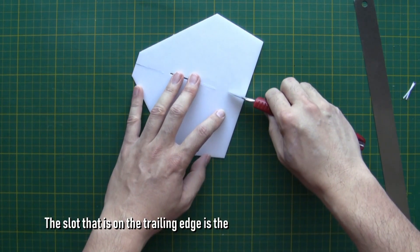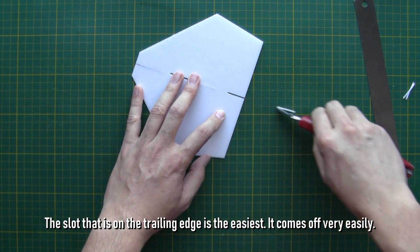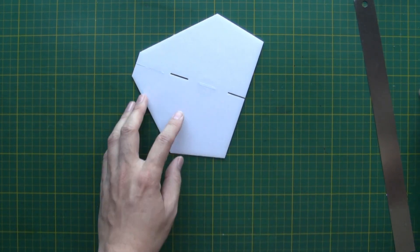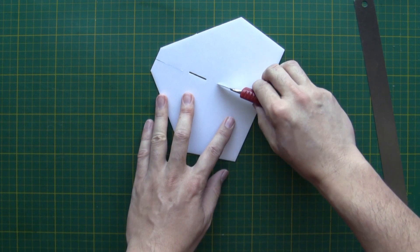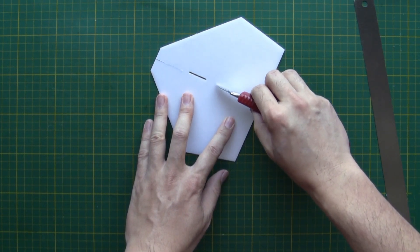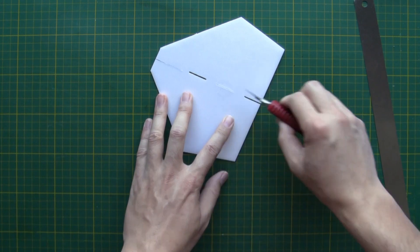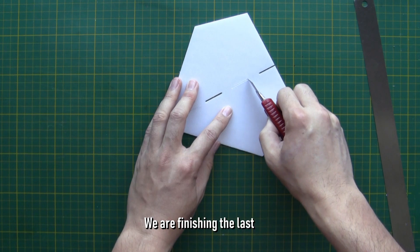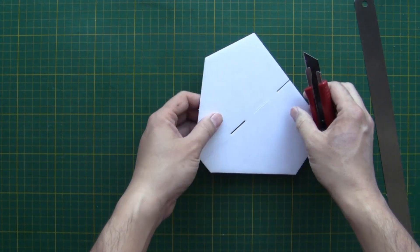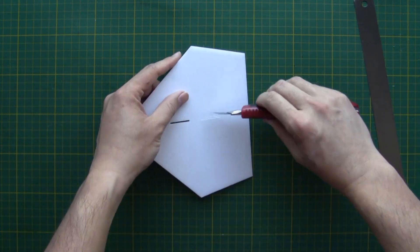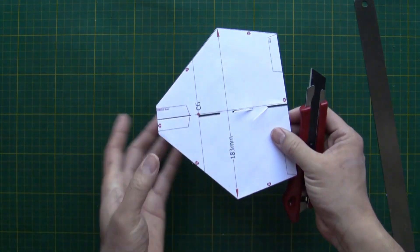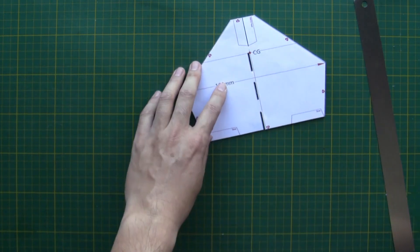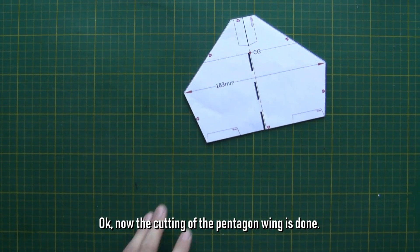The slot that is on the trailing edge is the easiest. It comes off very easily. We are finishing the last slot. Okay, now the cutting of the pentagon wing is done.